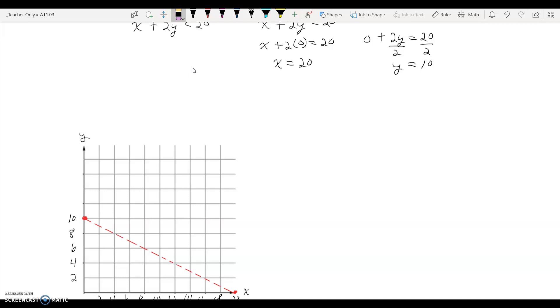So now if we use the test point zero, zero, zero plus two times zero is less than twenty. Zero is less than twenty, so that would tell me that this side of the line is actually going to get shaded over here. So all of my solutions are in this region here, which should make sense to us if he's spending less than twenty dollars. He's going to have less than that line right there.